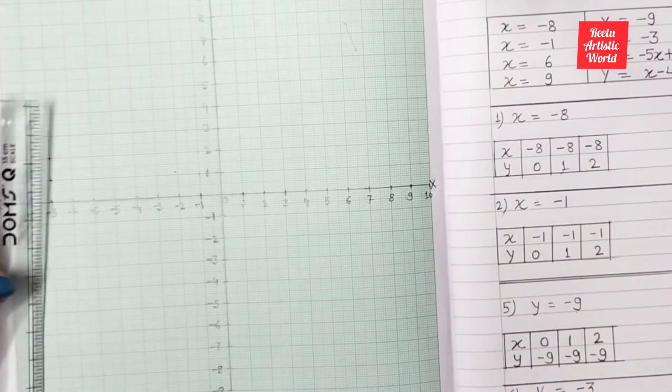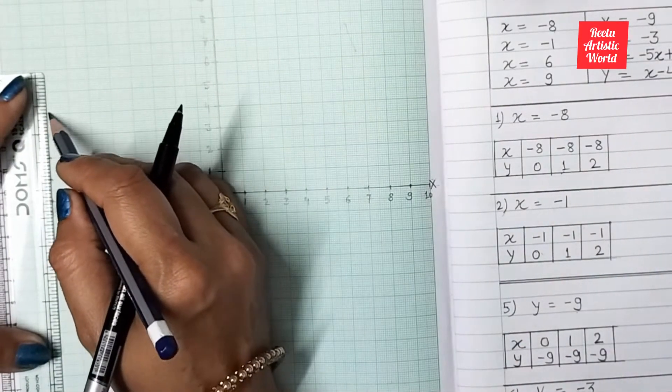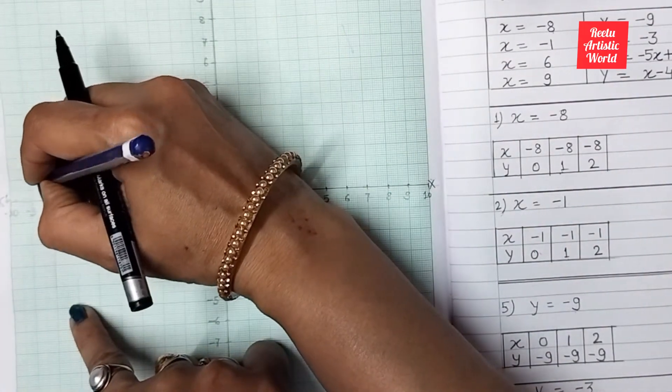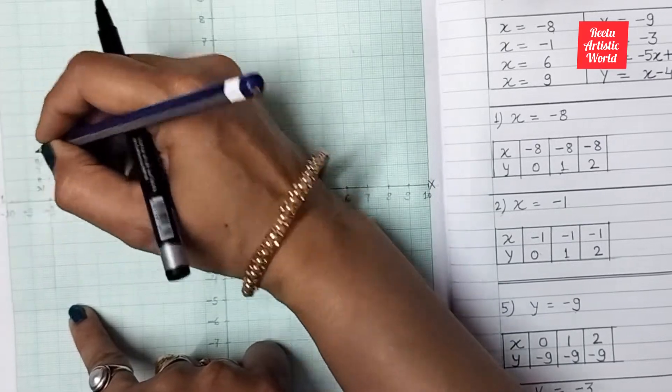As this line is parallel to y-axis, this shows at x is equal to minus 8 there are infinite points of y.